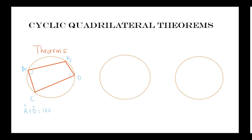And angle C plus angle B also equals 180 degrees. So the first theorem about cyclic quadrilaterals to remember is that opposite angles of a cyclic quad are supplementary.